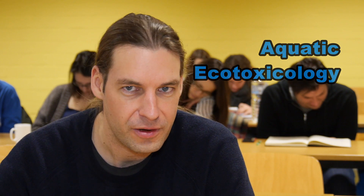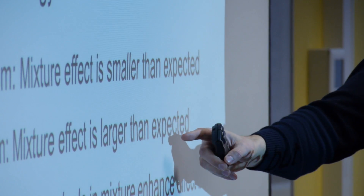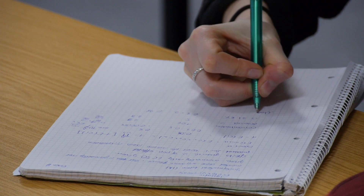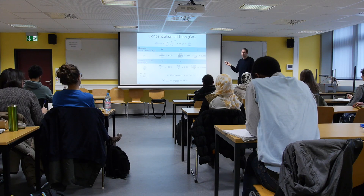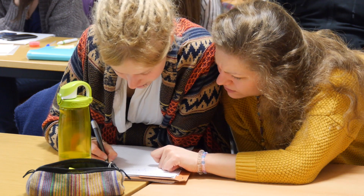In this course, if you ever wondered what happened to aquatic organisms after an oil spill, or you were interested in what happens when pesticides are flushed from agricultural surfaces into streams, we will answer these questions and provide you with the basic knowledge of entry paths of pollutants into aquatic ecosystems, their behavior, metabolization, and effects on organisms from the genes to ecosystem level.